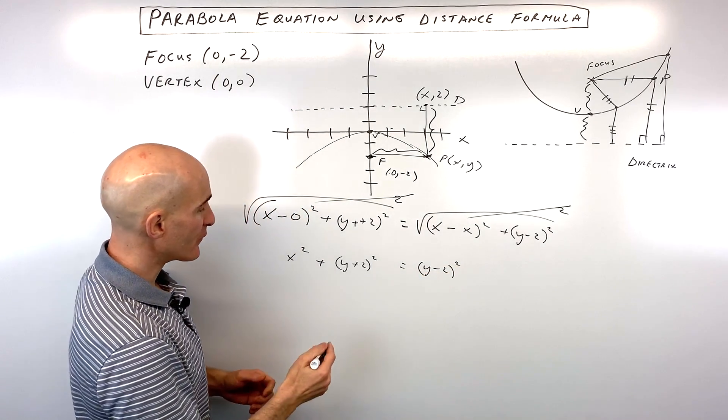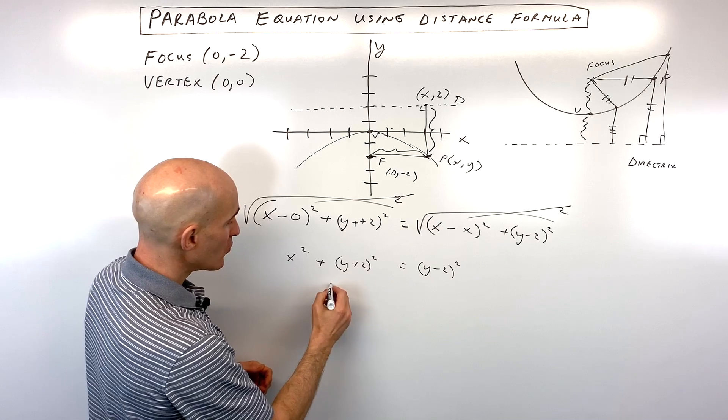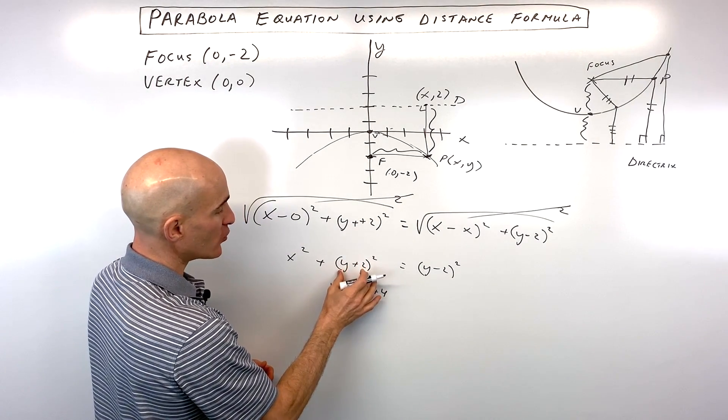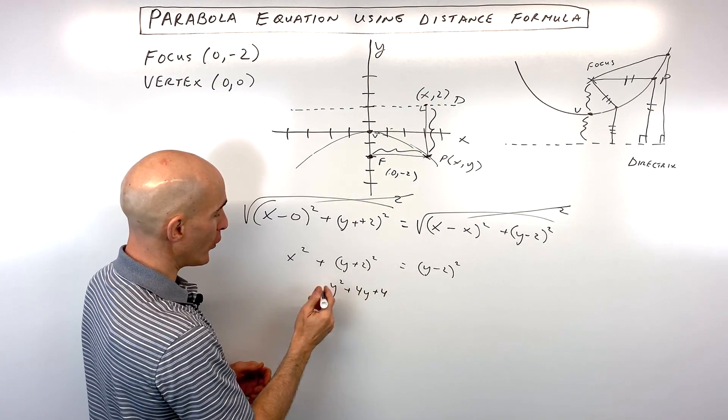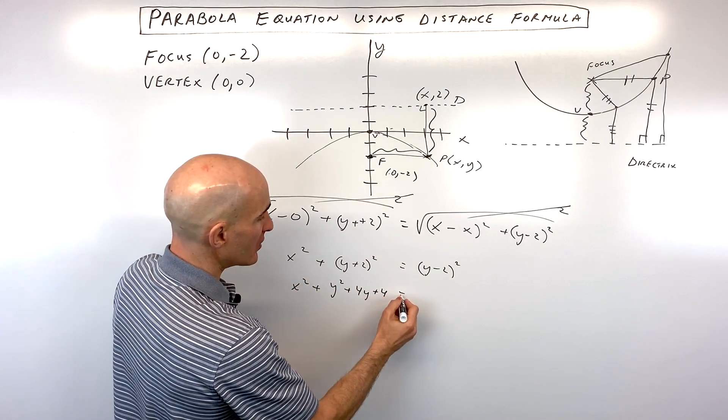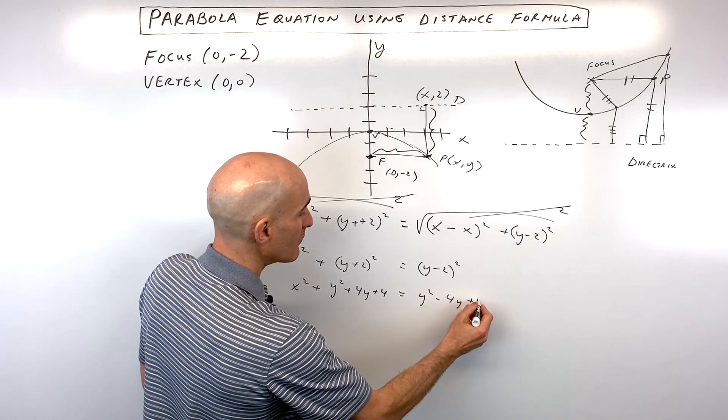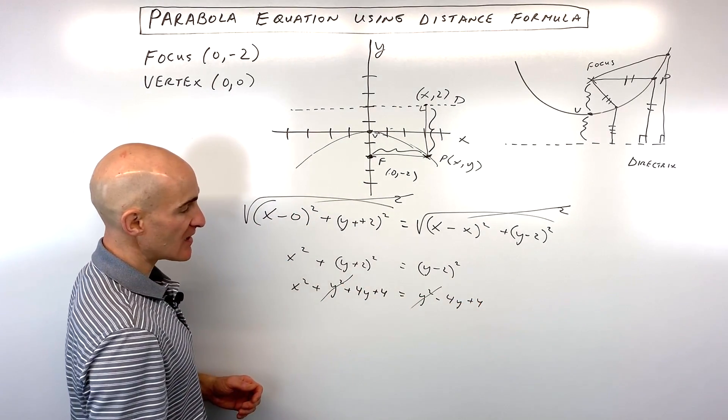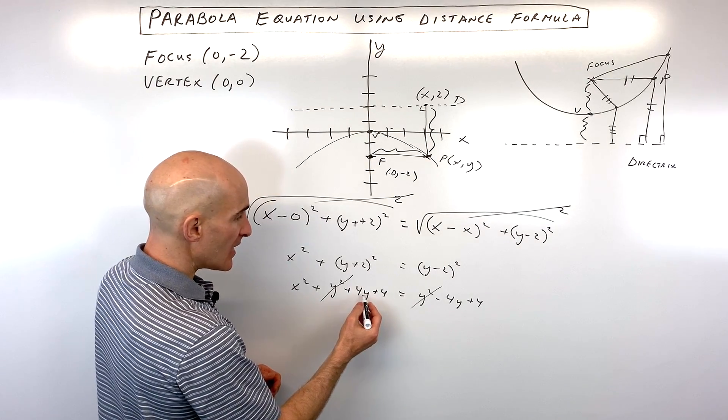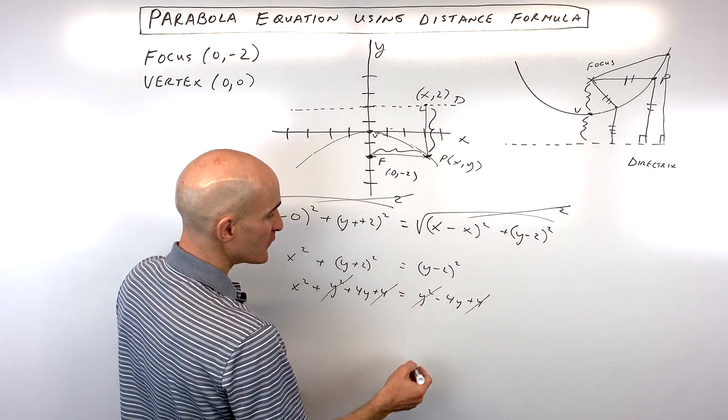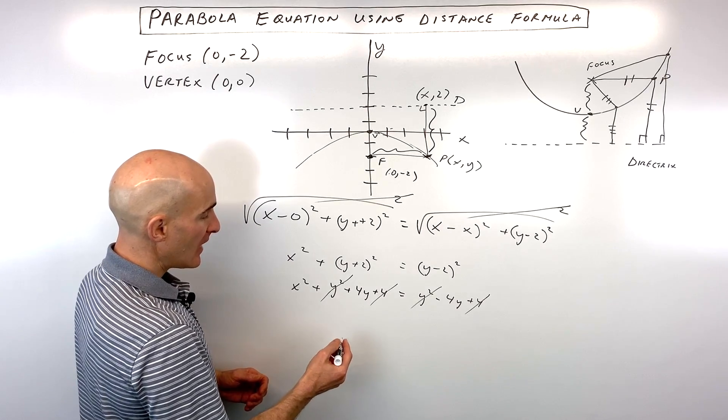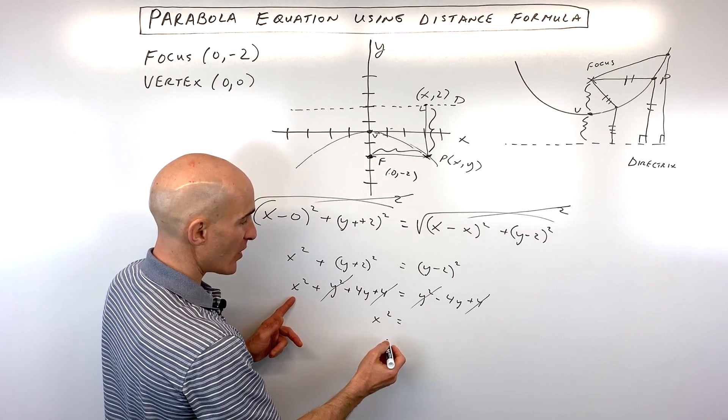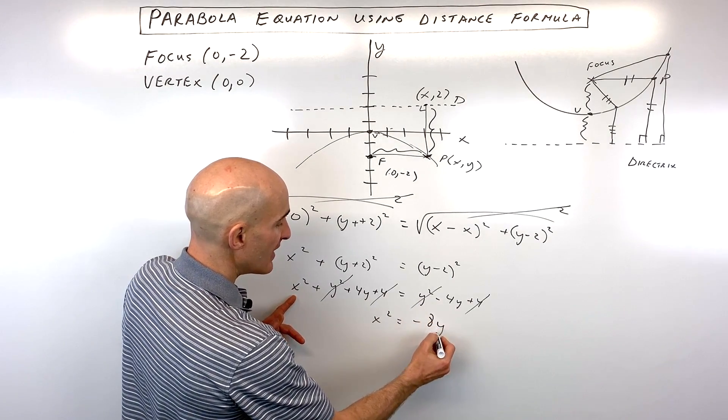Let's go ahead and see if we can simplify this down a little bit further. (y + 2)² is y² + 4y + 4. If you want, you can write this out twice, (y + 2)(y + 2) and FOIL. And then over here we have y² - 4y + 4. Now if we subtract y² from both sides, you can see that those cancel one another out. If I subtract 4 from both sides, these 4s cancel one another out. And if I subtract 4y from both sides, this is going to leave us with x² = -8y.